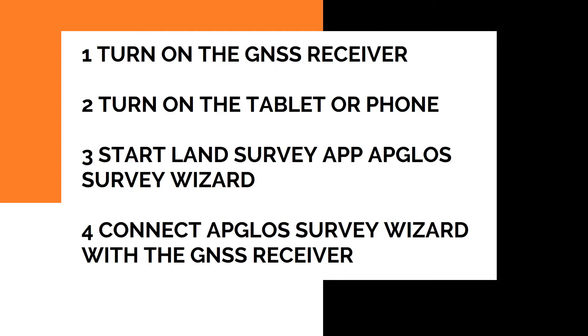After this one-time configuration of the GNSS receiver, starting land surveying is done in four easy steps. One: turn on the GNSS receiver. Two: turn on the tablet or the phone. Three: start the Ambulos Survey Wizard app. Four: connect Ambulos Survey Wizard with the GNSS receiver. And then you can already start land surveying.